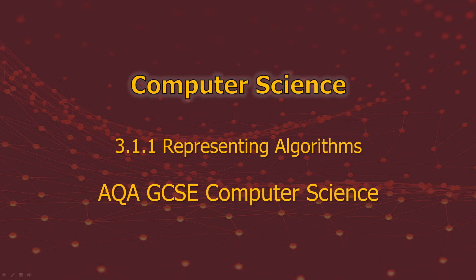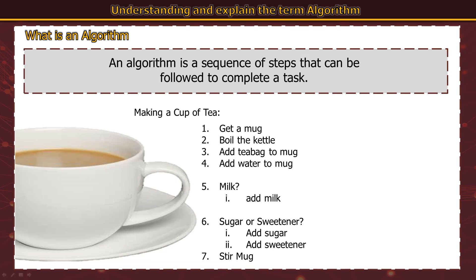In this video I'm going to explain what an algorithm is and the two types of algorithm that you need to know for your GCSE in computer science. An algorithm is a sequence of steps that can be followed to complete a task. You need to hit the two key points: it's a sequence or set of steps, and the second key point is it's to complete a task or solve a problem.